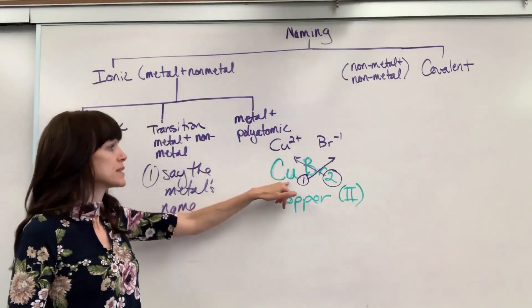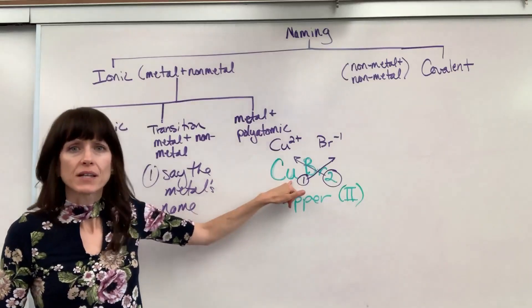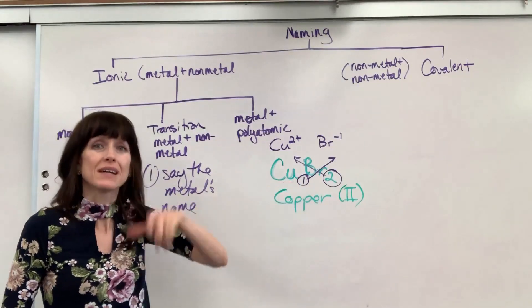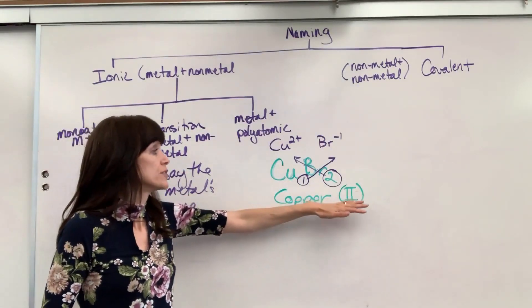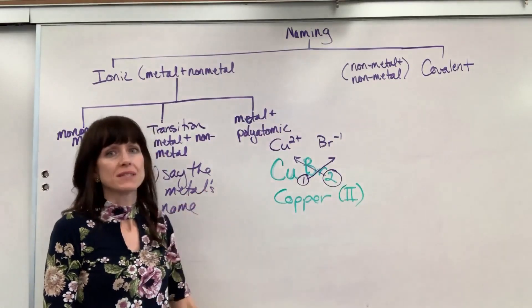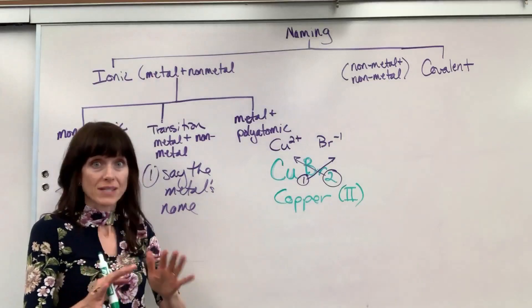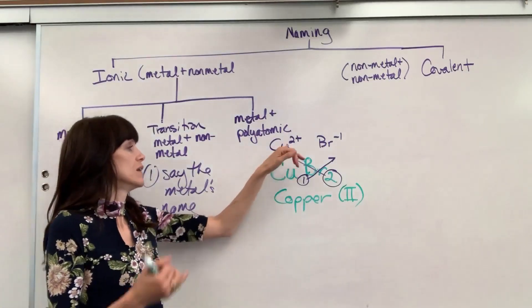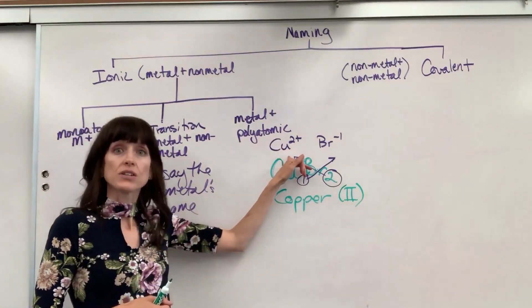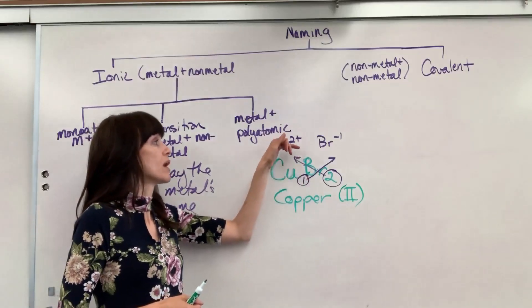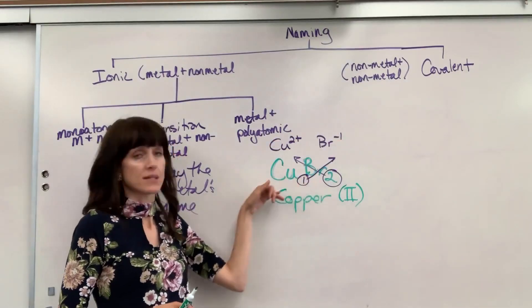Notice I'm not telling the reader the subscript. I'm not telling the reader how many coppers there are. I'm telling the reader the charge, and that's a common mistake students make. They'll go, 'oh, it's copper I because I have one copper.' No, that's not it. You're trying to tell the reader the original charge, that it was copper 2+, and then those charges cross down.